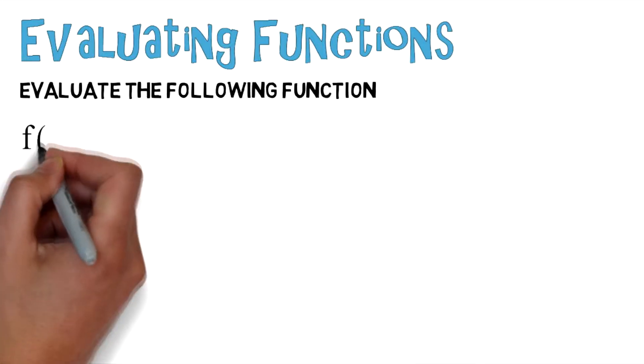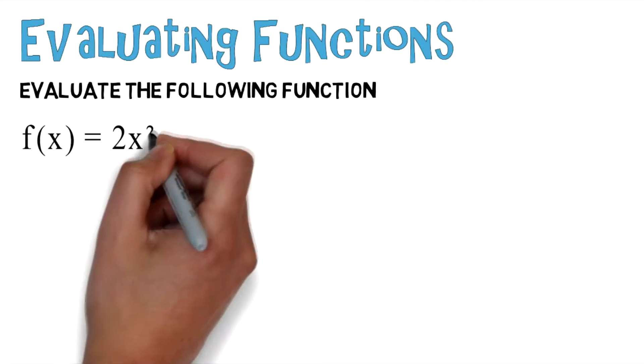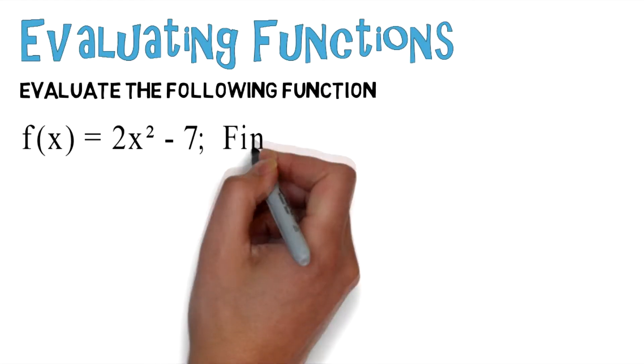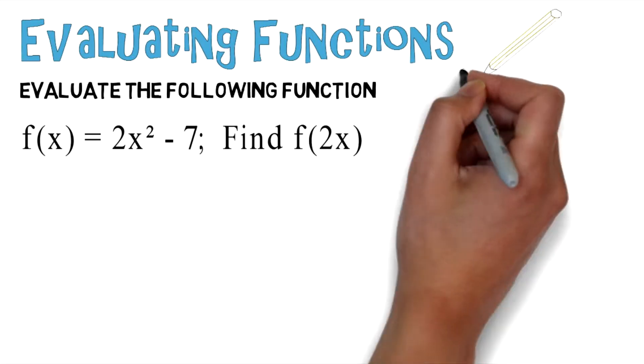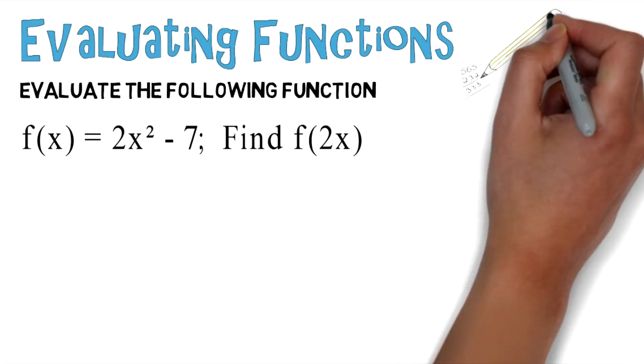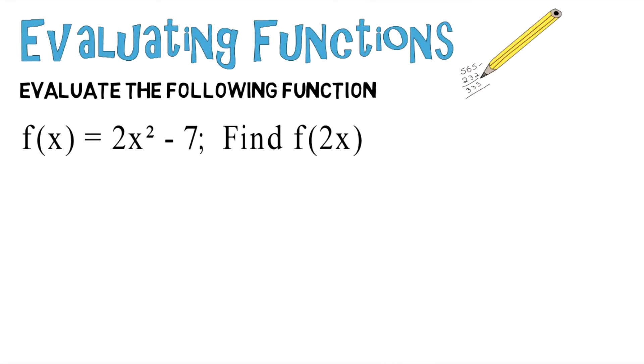Evaluating functions. Evaluate the following function: f of x equals 2x squared minus 7. Find f of 2x. So I want you to take a second to try to figure this problem out for yourself. And if you're getting stuck, here's a couple of steps to help you out.